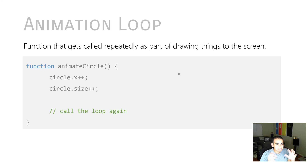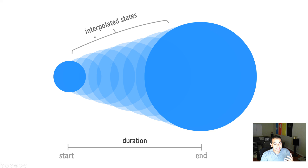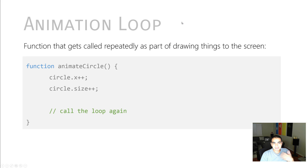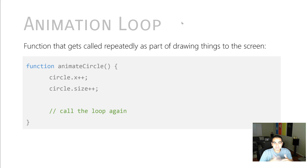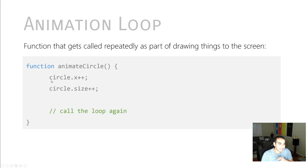In JavaScript, what is responsible for creating that animation — creating these interpolated states — is an animation loop. An animation loop is pretty simple: it's just a function or block of code that gets called over and over again as part of drawing things to the screen. In this case, we have this animateCircle function, and this function does two things: on a circle object, it increases the x property by one and the size property by one.